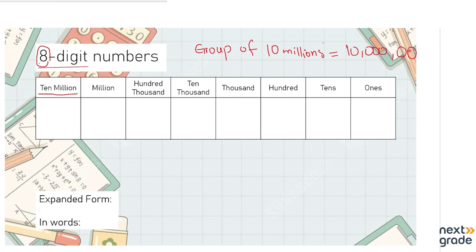Ten million has seven zeros in it — there are seven zeros. This is how you write ten million. So let's practice and we are going to use an example.